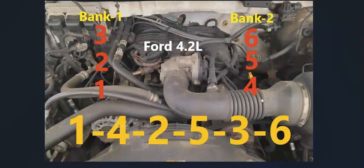On the driver side are 4-5-6. Bank 1 is on the passenger side and Bank 2 is on the driver side. If you need to know which side is Bank 1 or Bank 2, find cylinder number 1 - that side is always Bank 1, and the opposite is Bank 2. The firing order is 1-4-2-5-3-6.